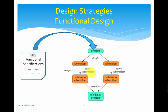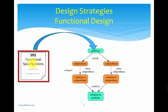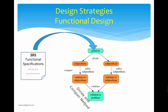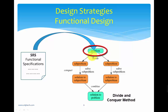Looking at this diagram: SRS stands for Software Requirement Specification, which has functional specifications. From those functional specifications we arrive at a functional design using the divide and conquer method. We have a problem in hand that must be converted into a solution. A customer gives you a problem — he wants to automate a particular case, converting from an old system to a new system. We divide that problem into a number of sub-problems.